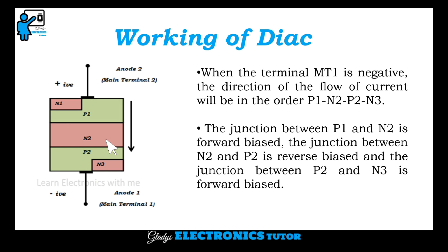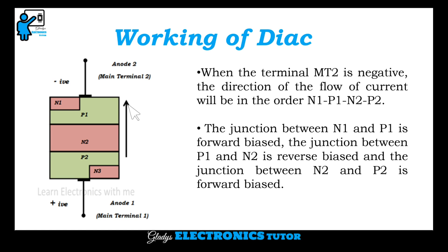The junction between N2 and P2 is reverse biased, and the junction between P2 and N3 is forward biased. When MT2 is negative and MT1 is positive, the direction of flow of current is N1, P1, N2, P2. The junction between N1 and P1 is forward biased, the junction between P1 and N2 is reverse biased, and the junction between N2 and P2 is forward biased.